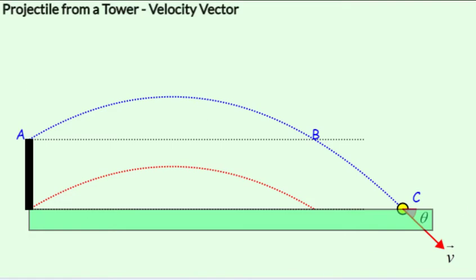Everything appears to be the same except that the projectile would have a longer time of flight and would have a greater range. Earlier, its range would have been the horizontal distance between a and b, but now its range is the horizontal distance between a and c.